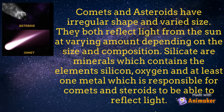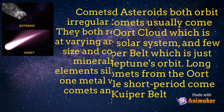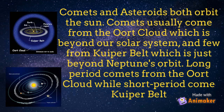Comets and asteroids have irregular shapes and varied sizes. They both reflect light from the sun at varying amounts depending on size and composition. Silicates are minerals containing silicon, oxygen and at least one metal, which are responsible for comets and asteroids being able to reflect light. Both orbit the sun. Comets usually come from the Oort cloud, which is beyond our solar system, and some from the Kuiper belt, just beyond Neptune's orbit. Long-period comets come from the Oort cloud while short-period comets come from the Kuiper belt.